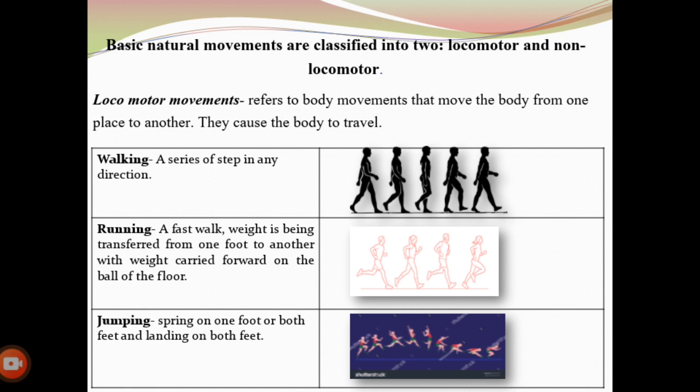Locomotor movements refer to body movements that move the body from one place to another, causing the body to travel. Examples include: walking — a series of steps in any direction; running — a fast walk where weight is transferred from one foot to another with weight carried forward on the ball of the foot; jumping — springing on one foot or both feet and landing on both feet; hopping — springing on one foot and landing on the same foot.